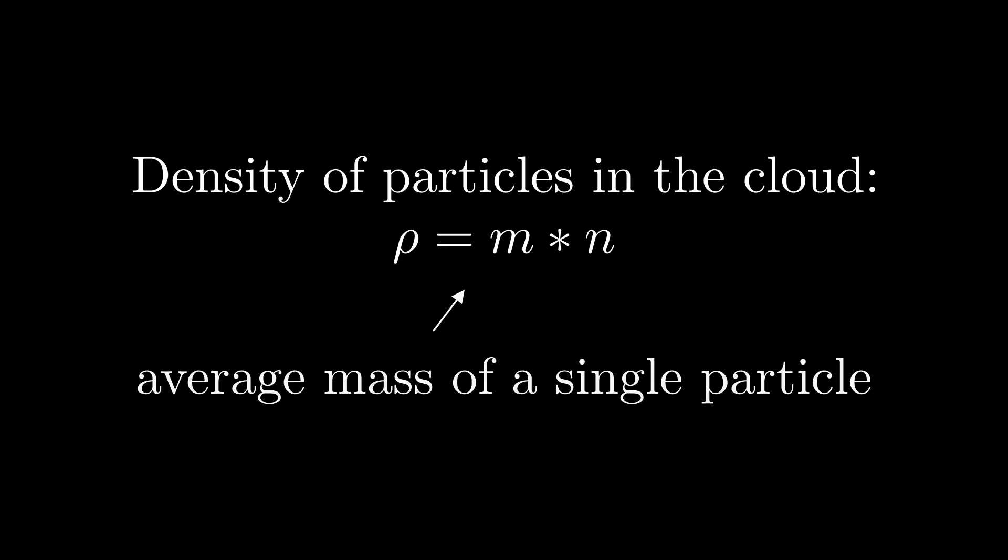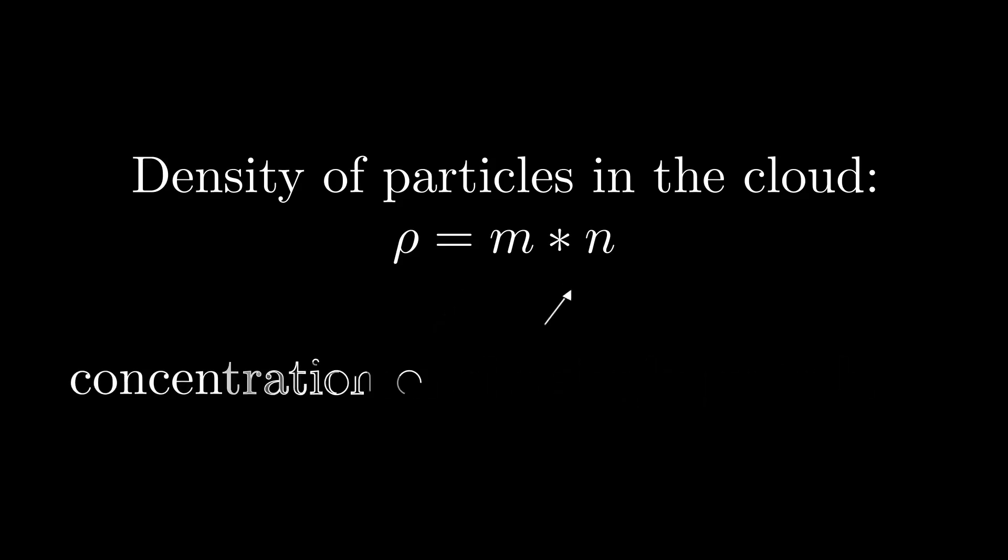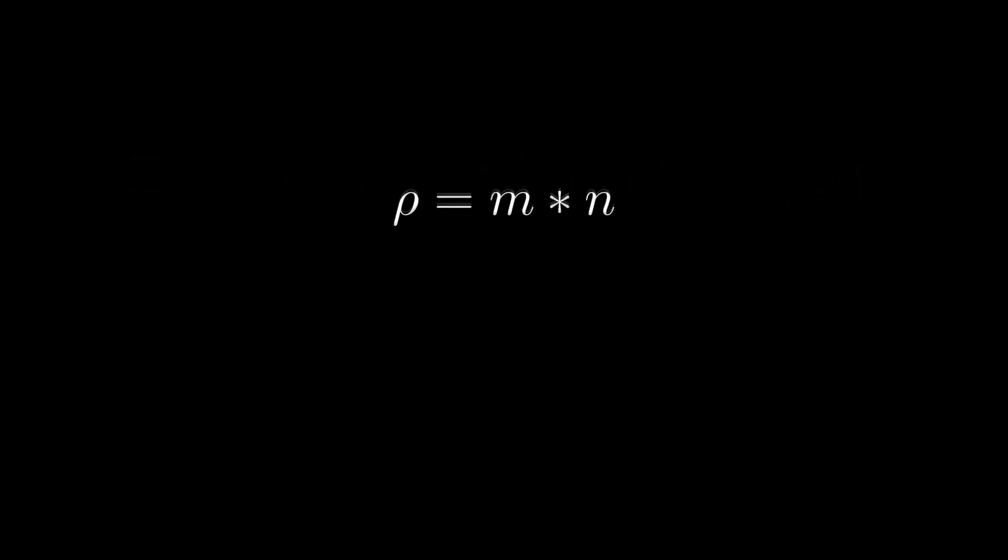Let's consider the problem of compressing a cloud of finite size lambda occupying the volume lambda cubed. And let's assume this cloud to be homogeneous and to have a density ρ equals to n multiply m, where m is an average mass of a single particle and n is the concentration of particles in the cloud. Then the mass corresponding to the scale lambda will be big M, which equals to ρ multiply lambda cubed.